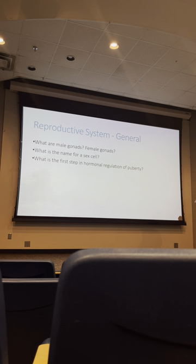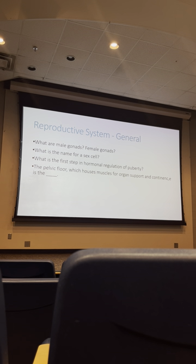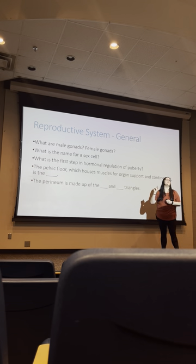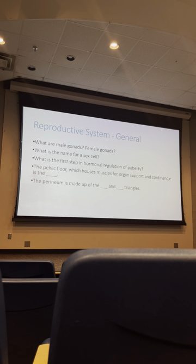FSH and LH will then target either the testes or the ovaries. Our pelvic floor, which houses muscles for organ support and continence, is known as the perineum. In that area we have two different triangles. The more anterior triangle is the urogenital triangle, and the posterior triangle is the anal triangle.